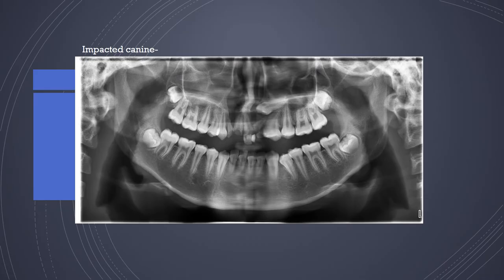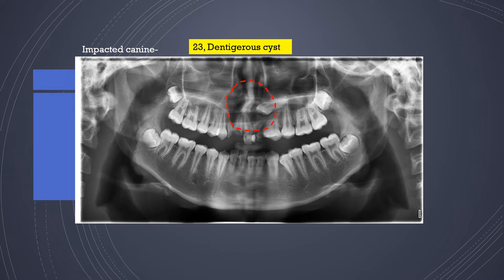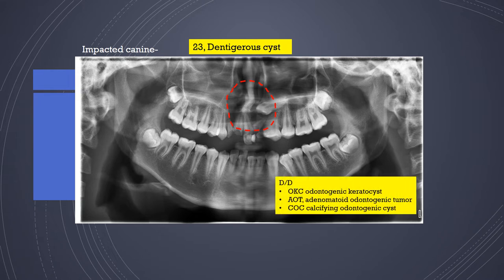Looking at an impacted canine, what is interesting in this radiograph is the considerable displacement of the maxillary anterior teeth, and you will notice a large radiolucency — most likely a dentigerous cyst associated with an impacted tooth. The radiographic differential diagnosis would include odontogenic keratocyst, adenomatoid odontogenic tumor, or calcifying odontogenic cyst based on location and likelihood.